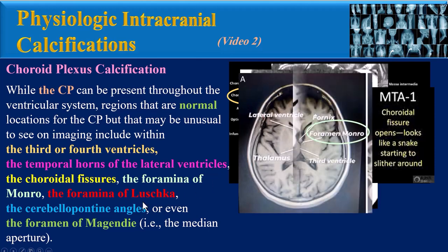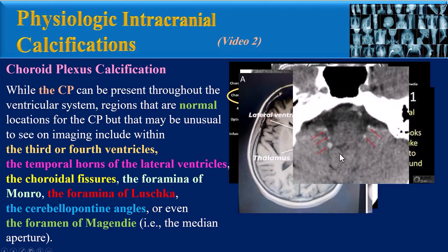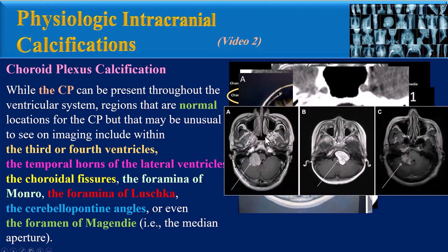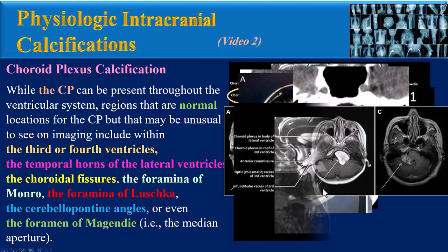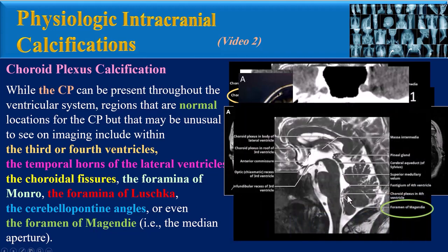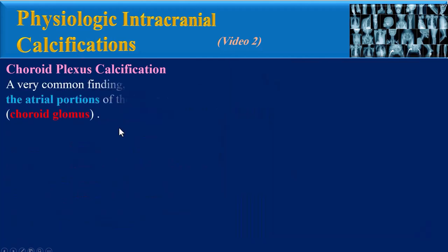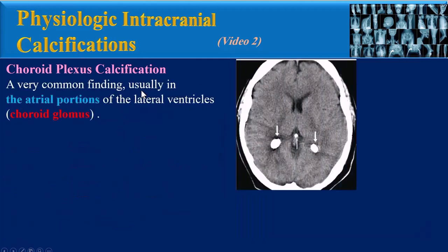Other regions that may be unusual to see on imaging include the choroidal fissures, the foramina of Monro, the foramina of Luschka, and the cerebral pontine angles. These MRI images show bilateral choroid plexus ependymomas in both CP angles, or even the foramen of Magendie, which is the median aperture. Choroid plexus calcification is a very common finding, usually in the atrial portion of the lateral ventricles or choroid glomus.